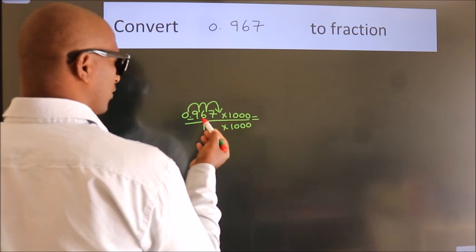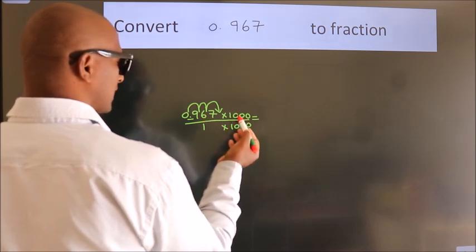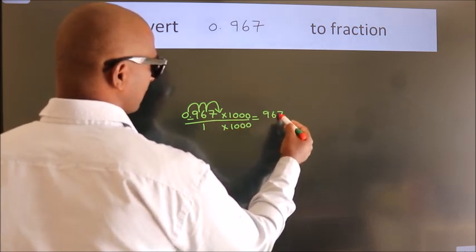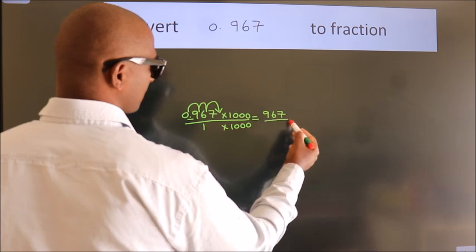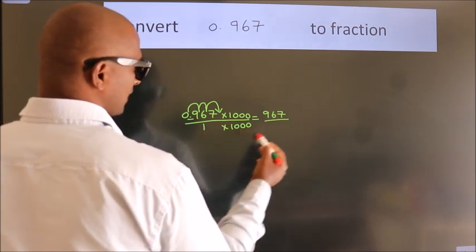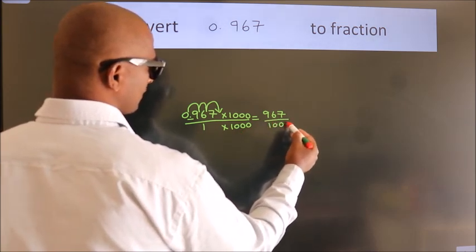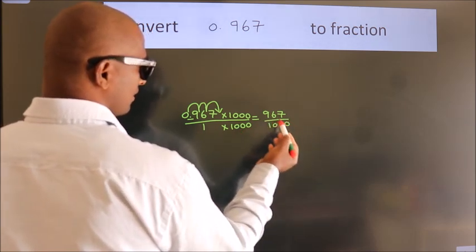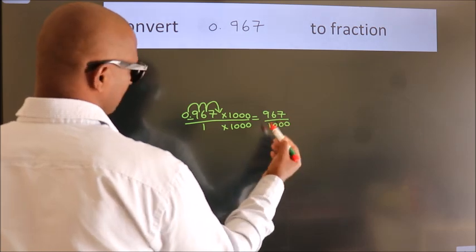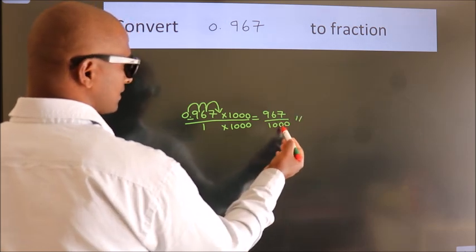0.967 multiplied by 1000 gives 967. 1 multiplied by 1000 gives 1000. This cannot be simplified any further, so the fraction is 967/1000.